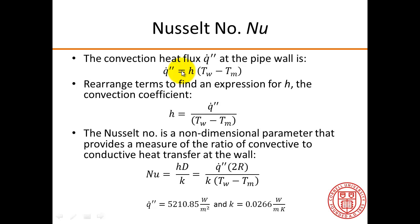The convective heat flux, q double prime, at the pipe wall is given by this expression here. And we can see that it is proportional to the difference between the wall temperature and the mixed mean temperature.